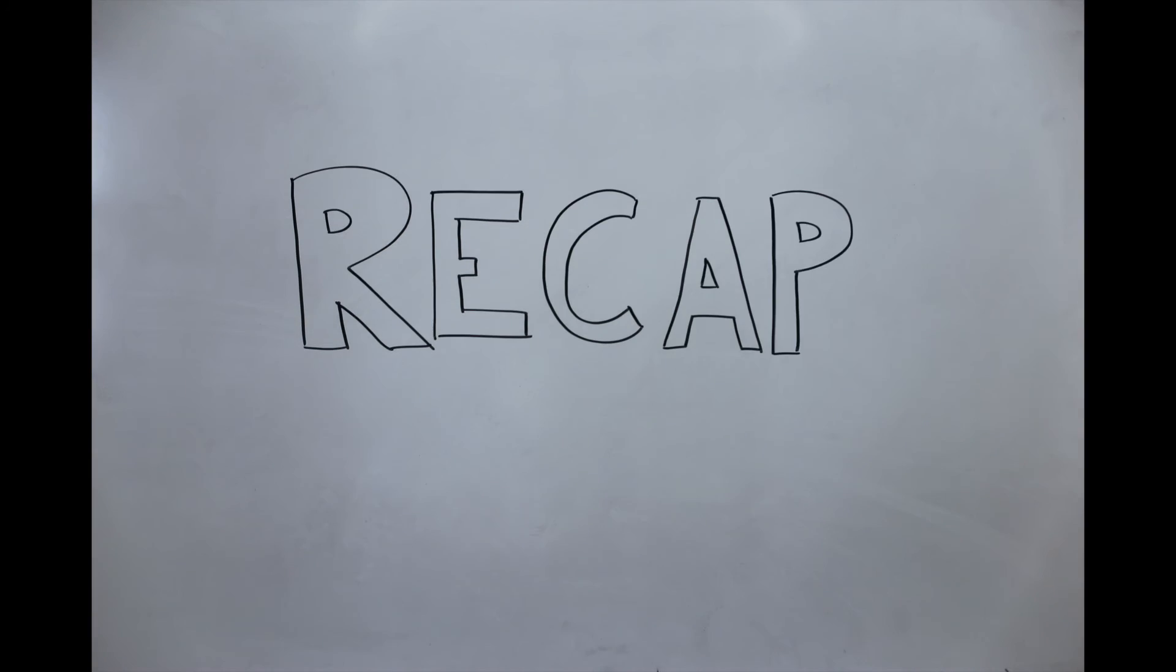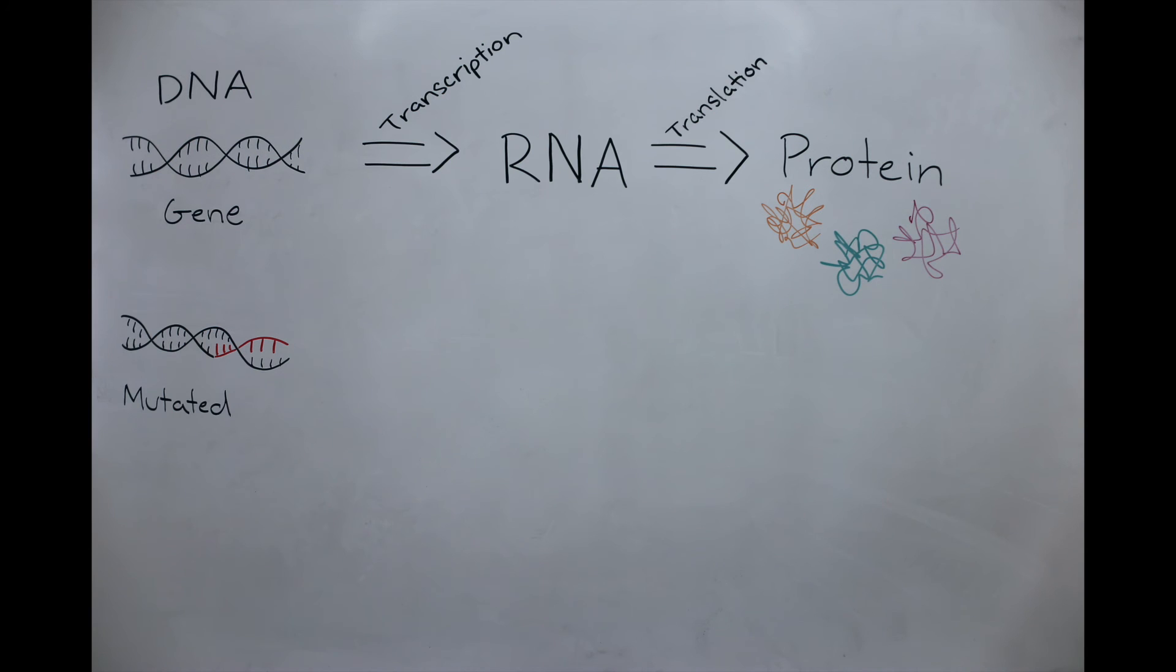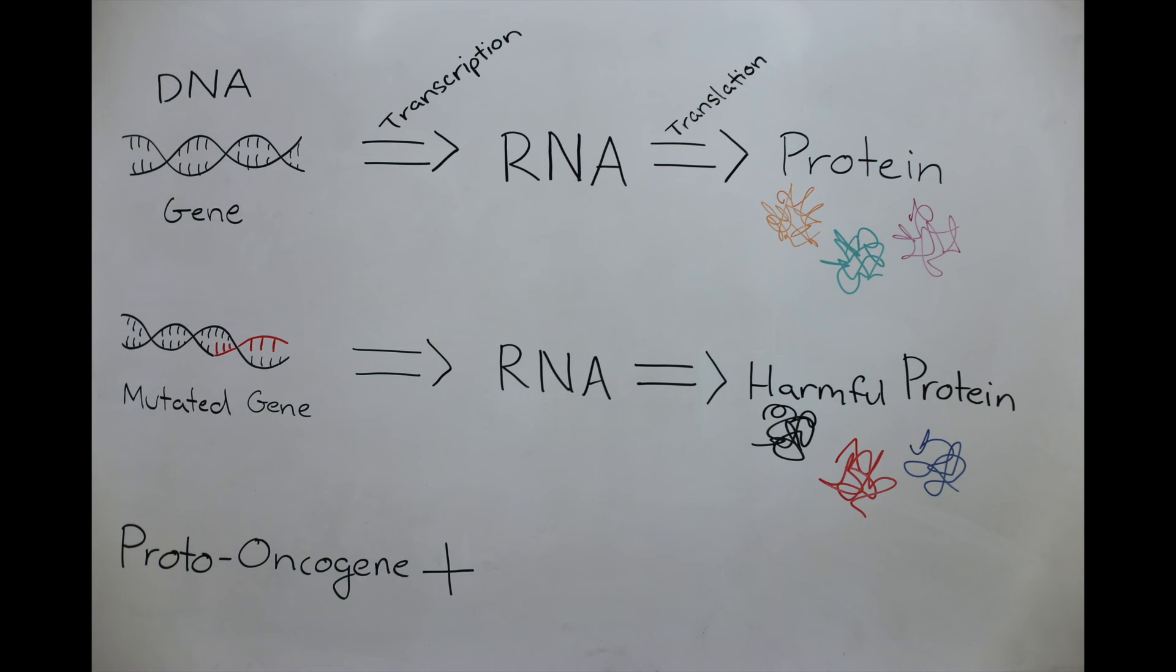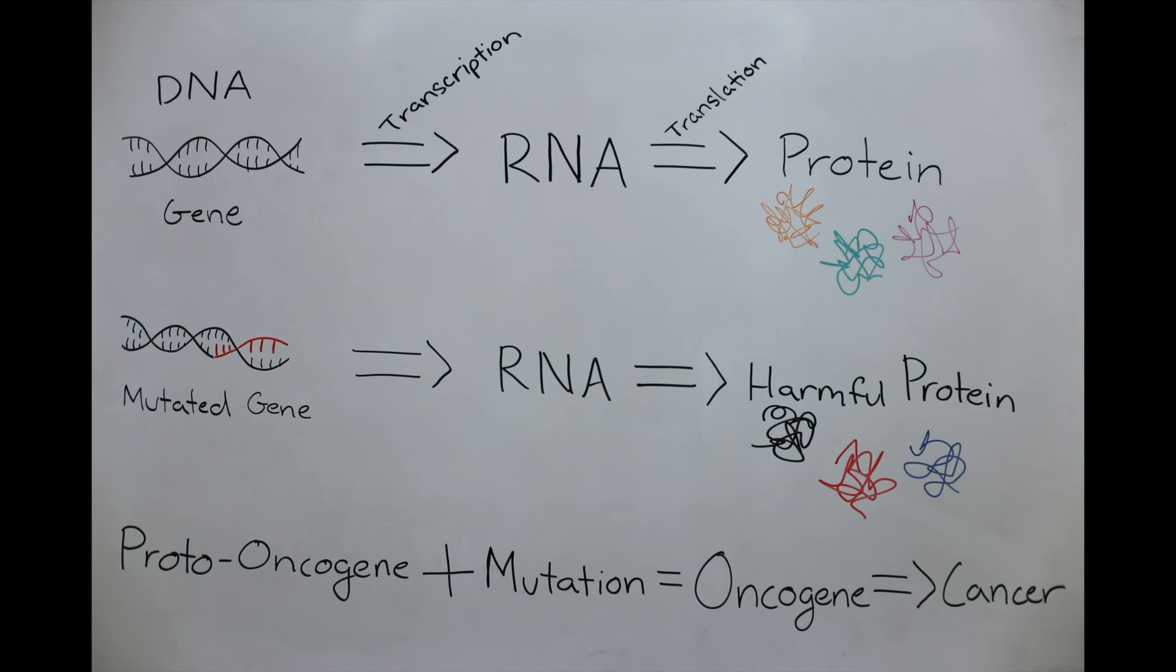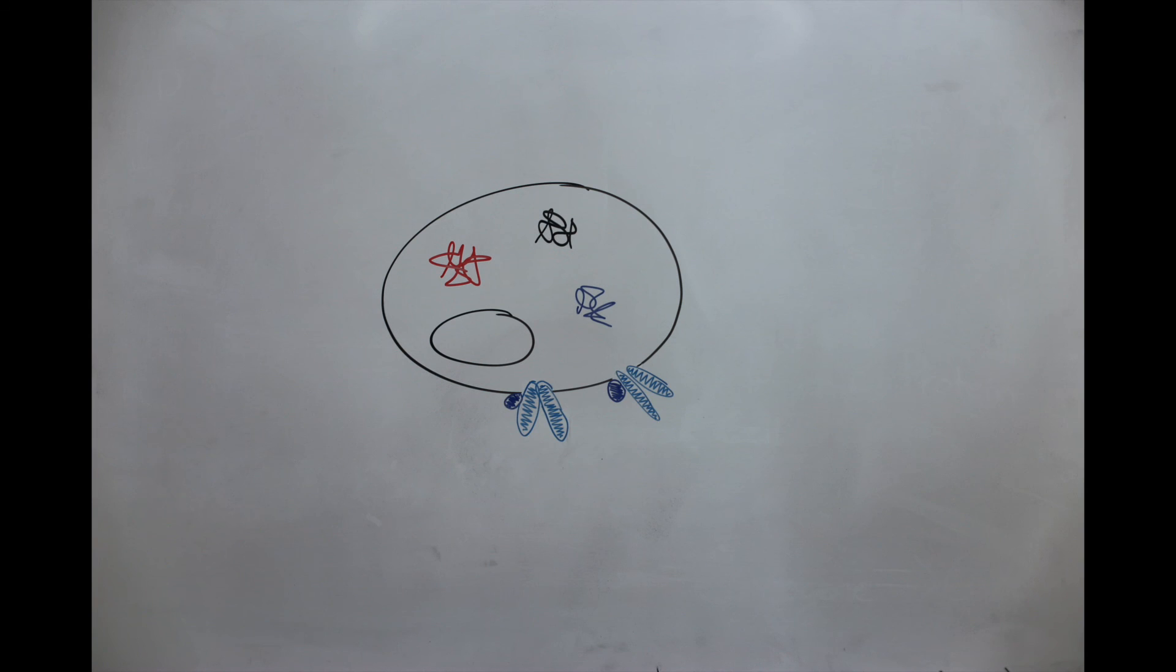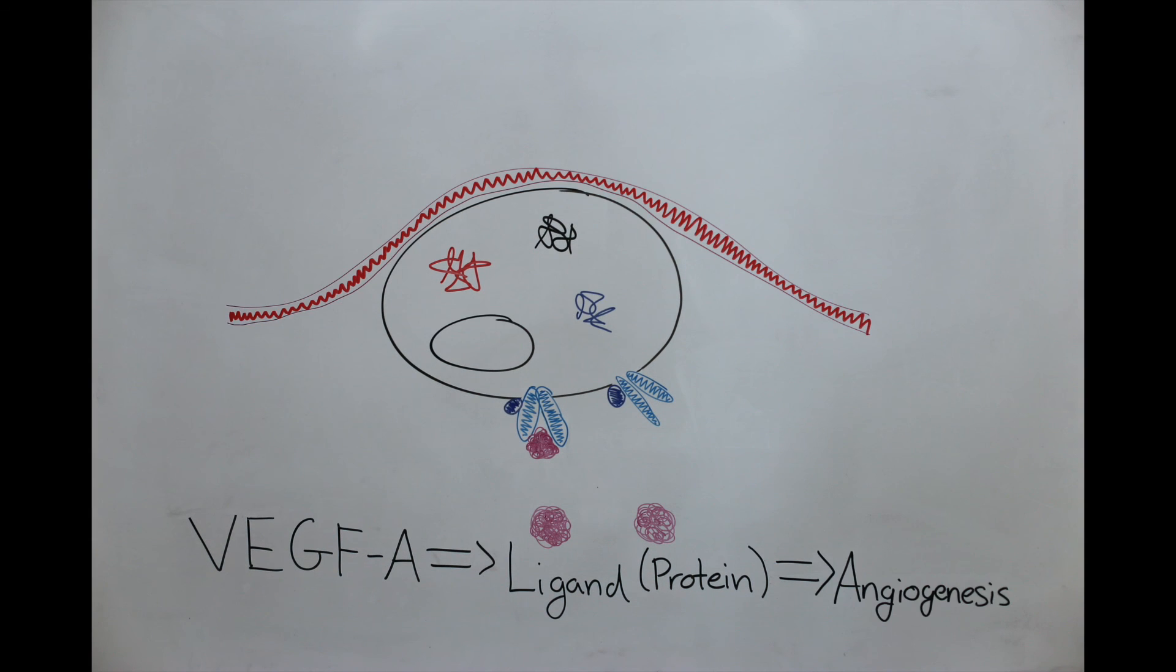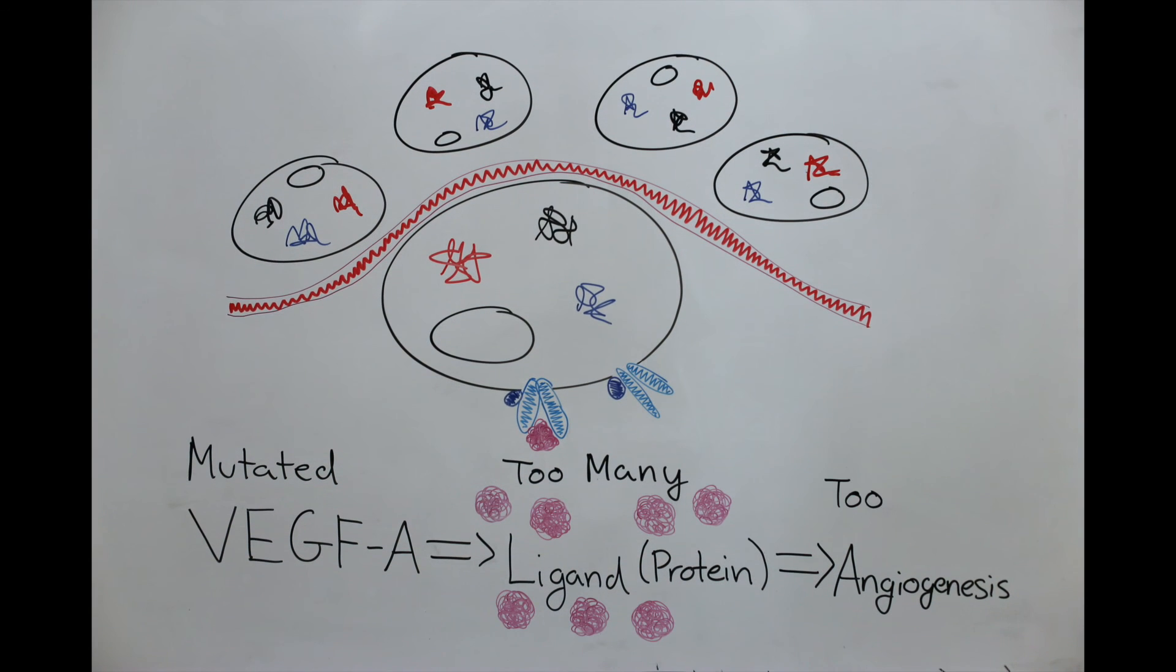So, to recap, genetic information called genes are stored inside of DNA in every cell. DNA is transcribed into RNA, and RNA is translated into proteins. Genes can mutate, and some mutations change the resultant protein into a harmful protein, or too much or too little protein. When the mutation occurs in a gene that regulates cell growth, the mutated gene is called an oncogene. The proteins that oncogenes encode for help cells grow uncontrollably and become cancer. Growing cells need extra blood and use a pathway called angiogenesis. VEGF-A is one gene that encodes for a ligand that attaches to a receptor, creating an intracellular pathway that promotes angiogenesis. When the regulatory regions of the VEGF-A gene are mutated, the gene is constantly activated, becoming an oncogene and creating too many proteins that help cancerous cells grow.